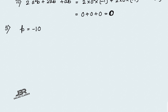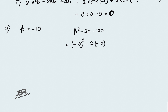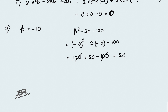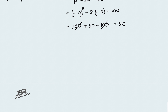Sum number 5: p equals minus 10, find the value of p² minus 2p minus 100. So (minus 10)² minus 2 into (minus 10) minus 100. The square is even so it's positive: 10² equals 100. Then minus minus 10 is plus 20. So 100 plus 20 minus 100 — the 100s cancel — giving 20 as your answer.